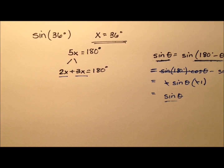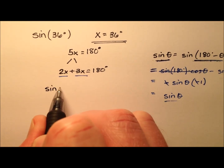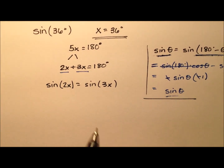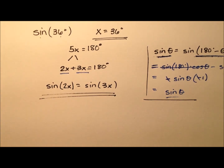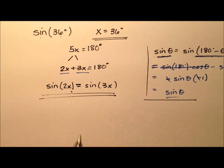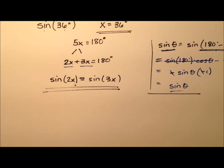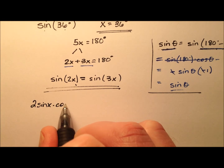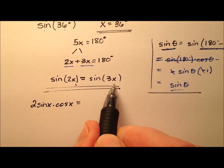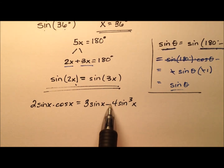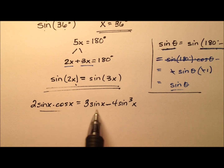We're going to use that knowledge and write a nice equation: the sine of 2x equals the sine of 3x. Everything we do in this video to find the value of sine of 36 is going to be based upon this equation. Since x is 36 degrees, we'll use double angle and triple angle identities, and ultimately we'll be solving for the sine of x, which gives us the sine of 36 degrees.